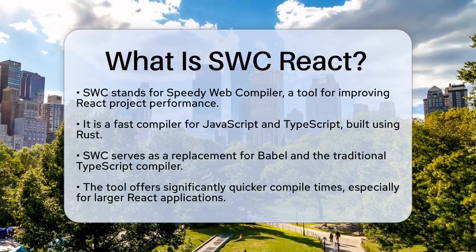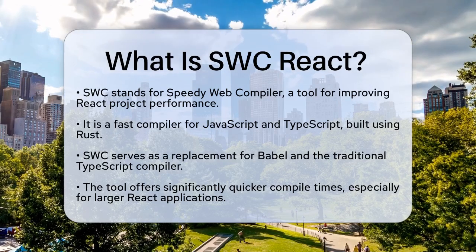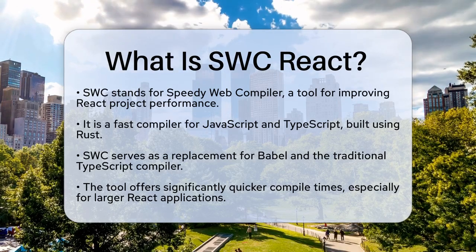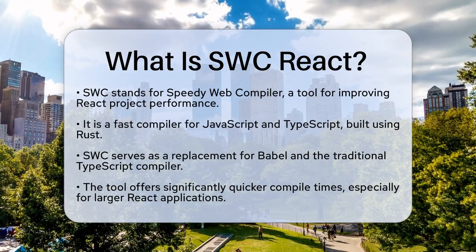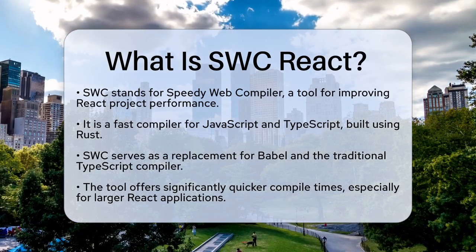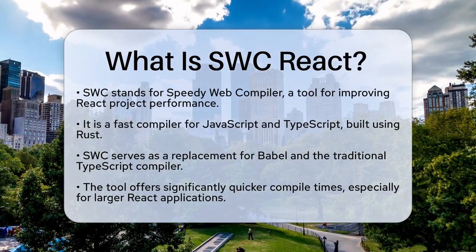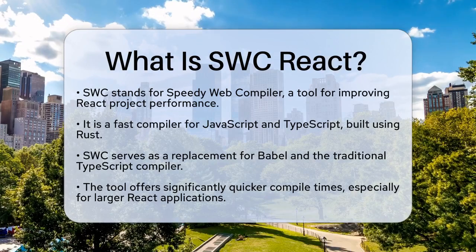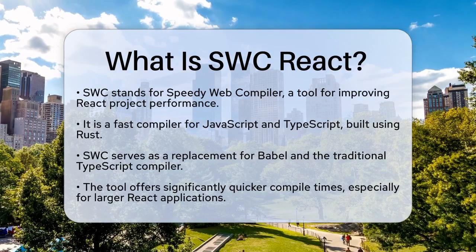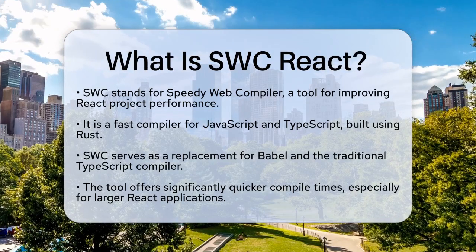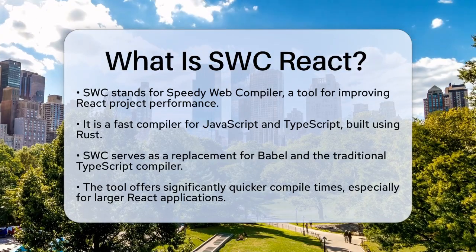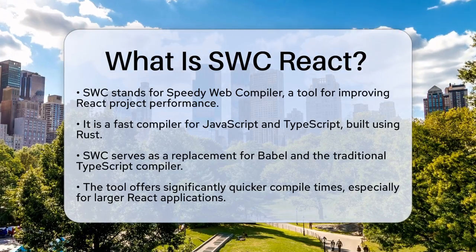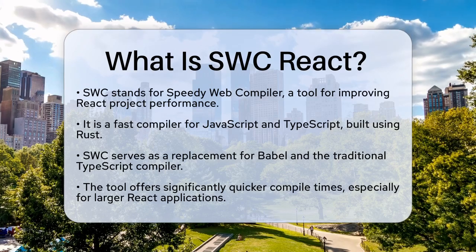SWC is a super-fast JavaScript and TypeScript compiler written in Rust. It's designed to be a drop-in replacement for Babel and the traditional TypeScript compiler, offering significantly faster compile times. This is especially beneficial for larger React projects where build times can become a real bottleneck.